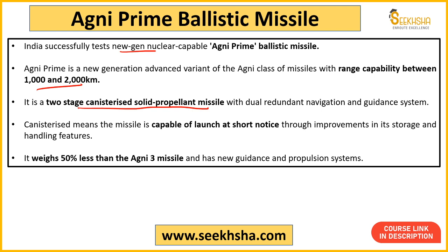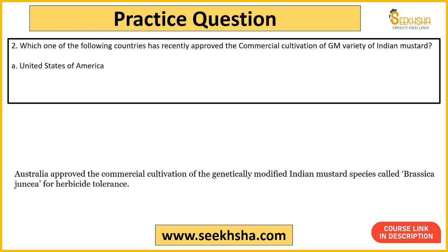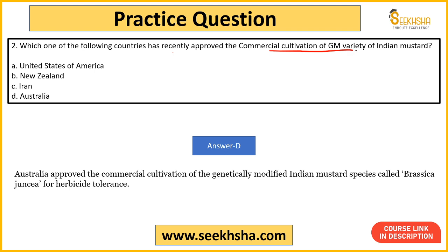Moving to the next question: which one of the following countries has recently approved the commercial cultivation of GM variety of Indian mustard? The answer is India. This Indian mustard variety — with botanical name Brassica juncea — is a herbicide tolerant variety. Its approval is significant from a current affairs perspective.